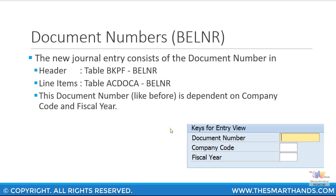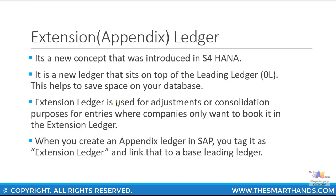Let's look at what is consistent between SAP ERP and SAP S/4HANA. The document number is still consistent using the BELNR field — the header document number in the BKPF table and BELNR field is the same as in the line item table ACDOCA. So the document number, as before in SAP ERP, is dependent on company code and fiscal year.